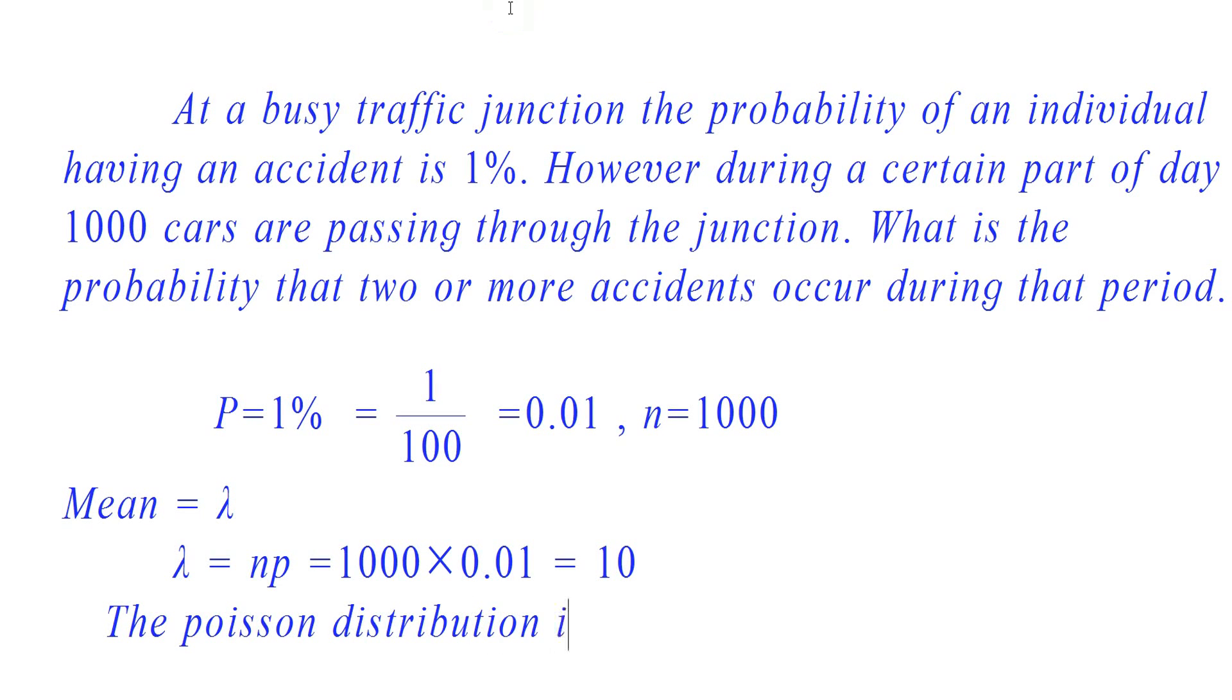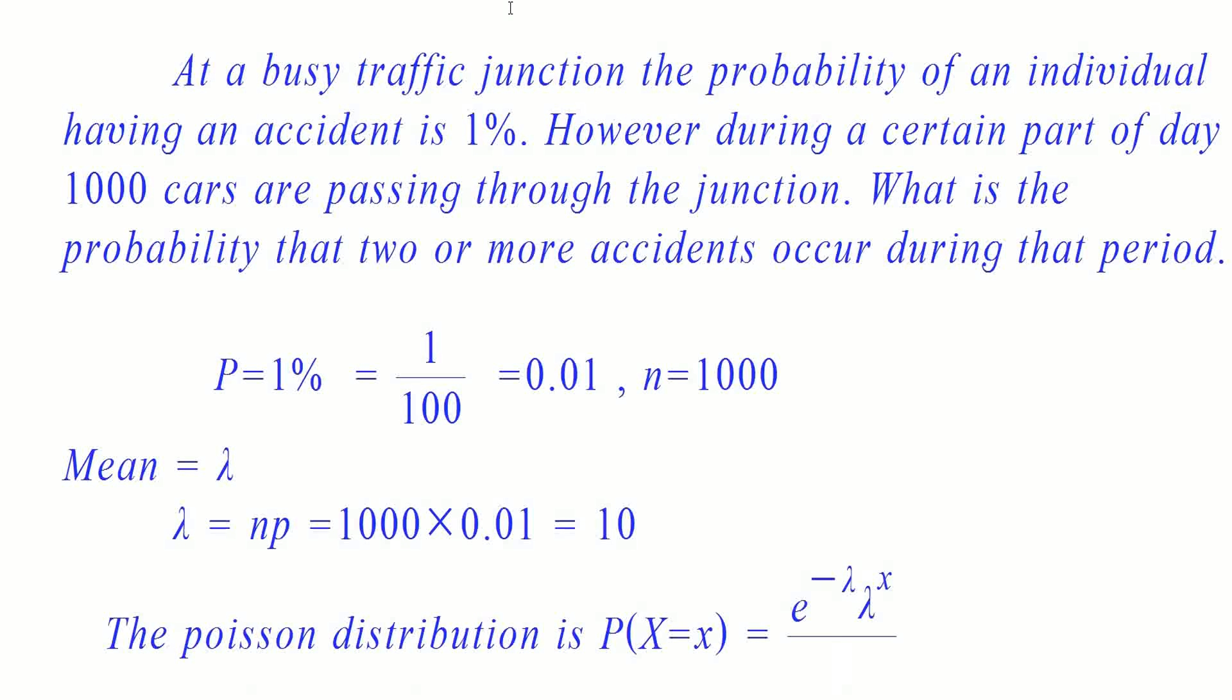We know that the Poisson distribution is P(X=x) equals e raised to minus lambda times lambda raised to x by x factorial.